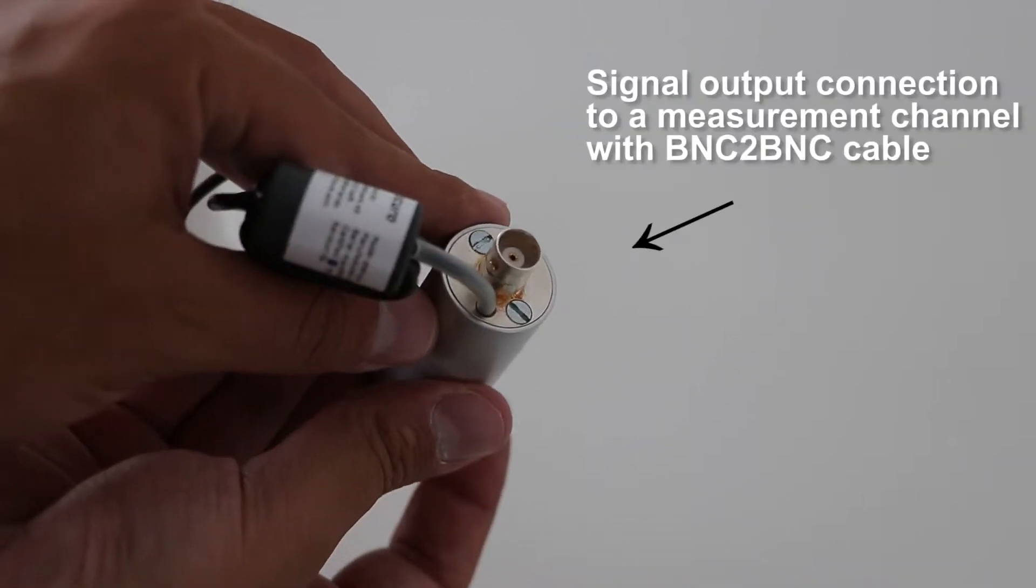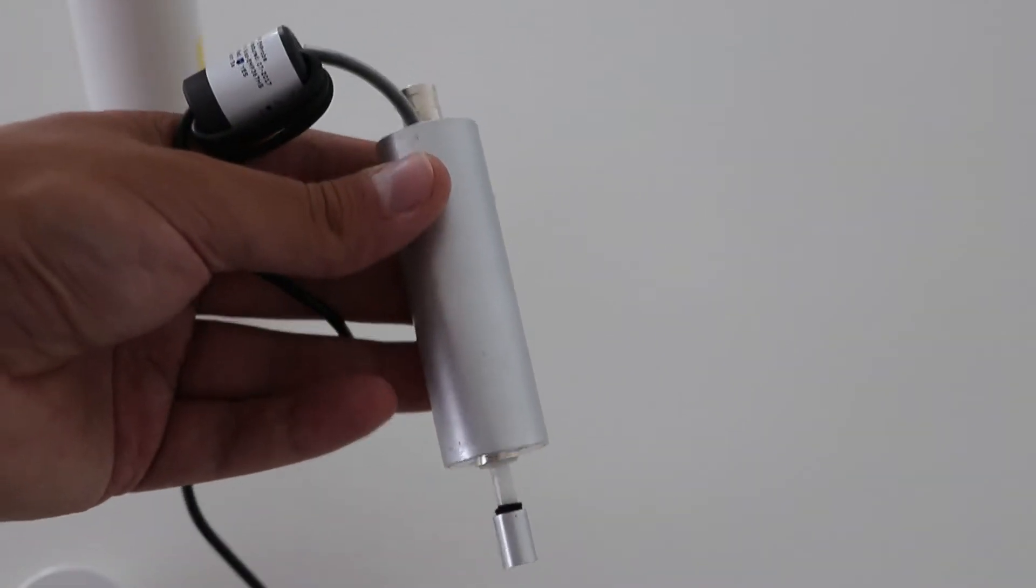At the back of the probe, you'll find the connection to your oscilloscope through a BNC to BNC cable.